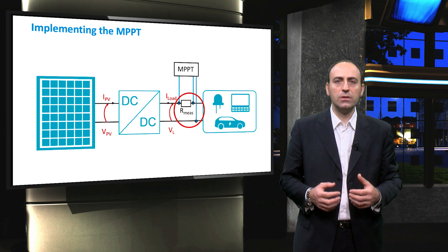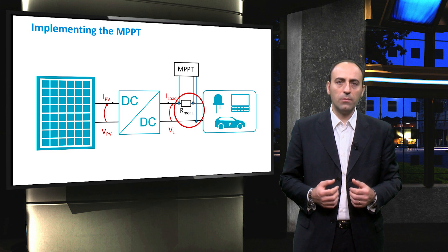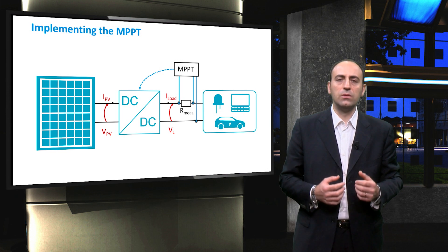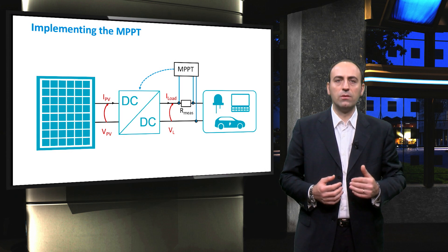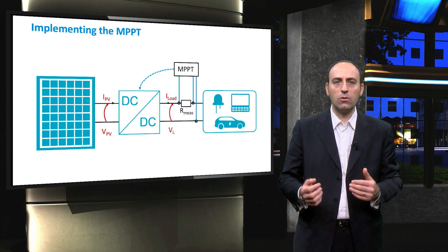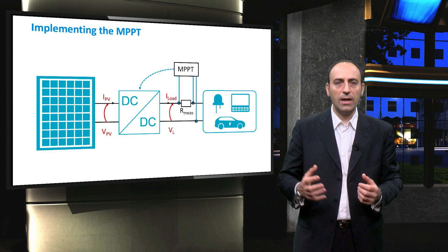The tracker measures the current and voltage at the output side and, according to its algorithm, it sends some signal to the DC-DC converter, for example to step up or down the voltages between input and output in order to meet the voltage requirements of both PV and the load sides.